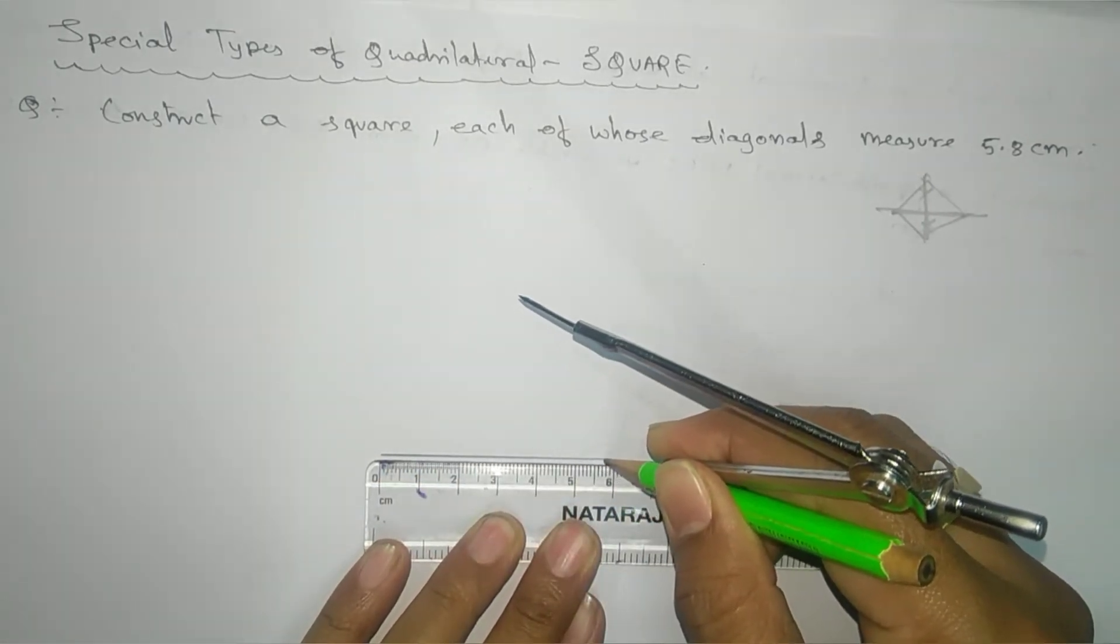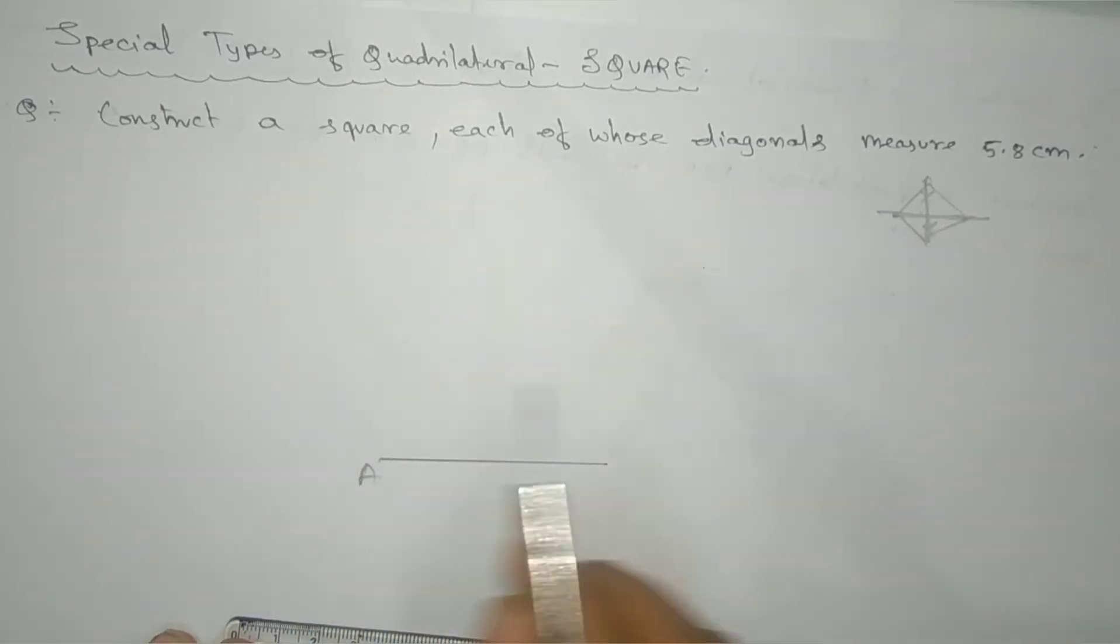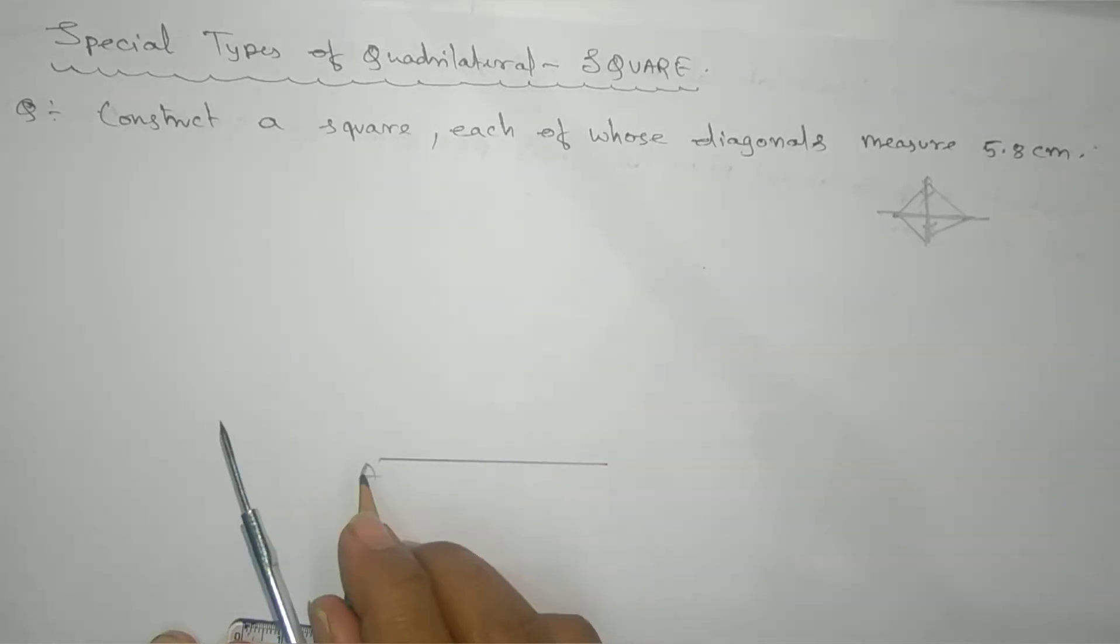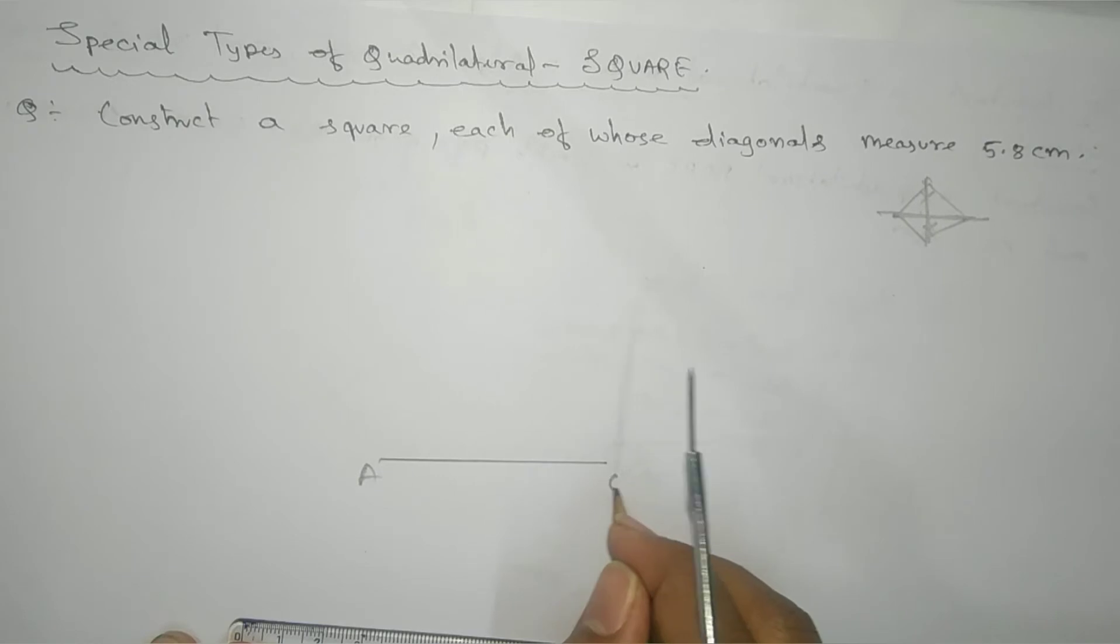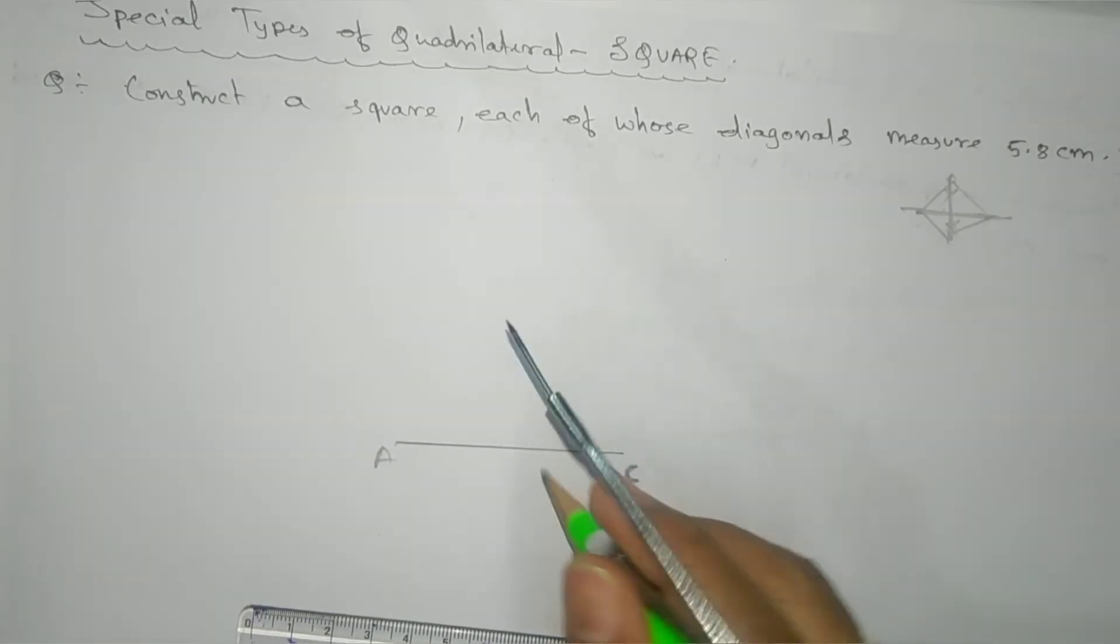Here we'll take this as A and C. So A, B, C, D - this will be your C, you can take it. Now we need a perpendicular bisector.